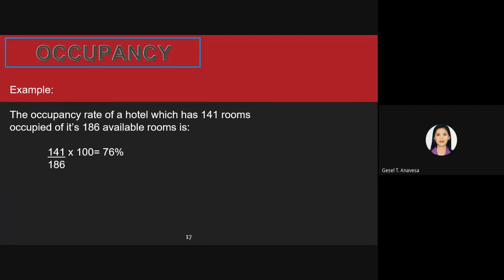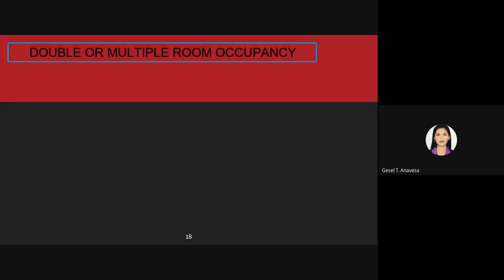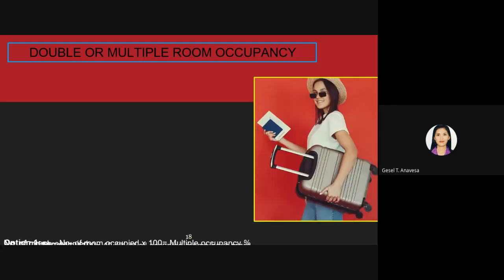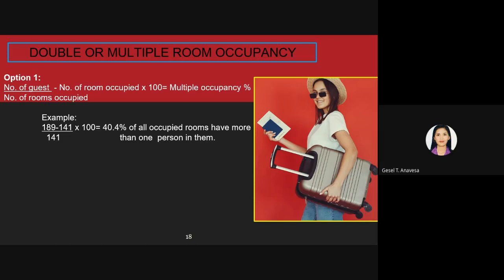It must be remembered that room occupancy may be calculated differently according to how out-of-order rooms and free-of-charge rooms are handled. You should find out first what policy the establishment has before calculating the room occupancy percentage. For double or multiple room occupancy, this statistic is used to determine linen and guest amenity requirements, food and beverage stock requirements, and potential revenue outlets. There are two methods for calculating this ratio.